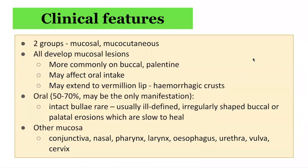In terms of clinical features of Pemphigus vulgaris, there are two predominant groups: mucosal-only presentation, and mucosal combined with cutaneous presentation. All Pemphigus vulgaris cases usually involve some sort of mucosal lesions, most commonly in the mouth, including the buccal and palatine surfaces, which can impact oral intake.